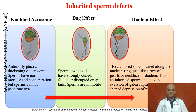Inherited sperm defects may result in infertility or Impotentia generandi. In the knobbed acrosome defect, the sperm has an anteriorly placed thickening of the acrosome; sperms have normal motility and concentration but cannot penetrate the ova. In the DAG defect, spermatozoa have strongly coiled tails, folded, disrupted, or split tails, and the sperms are immotile.